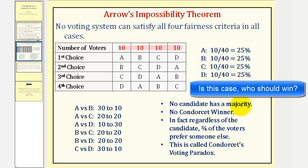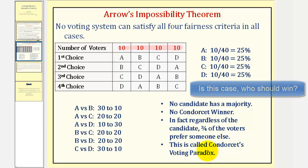So no candidate has a majority and there's no Condorcet winner. If we do a one-to-one comparison, no candidate wins in every one-to-one comparison. In fact, regardless of the candidate, three-fourths of the voters prefer someone else. When this occurs, this is called Condorcet's voting paradox.